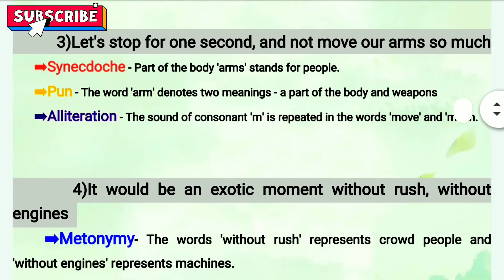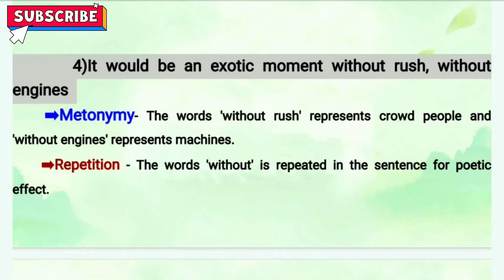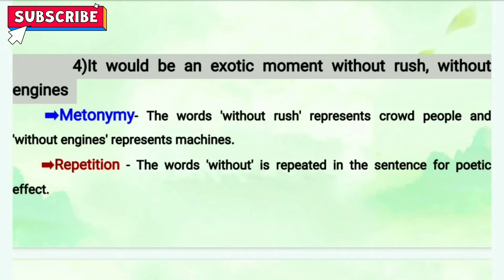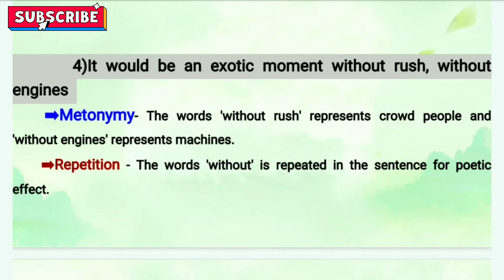Fourth line: 'It would be an exotic movement without rush, without engines.' Here 'without rush' and 'without engines' are used to represent something else — 'without rush' represents the crowd, and 'without engines' clearly represents noise, machines, and vehicles. Instead of naming them directly, a change of name is used, and that is why it is metonymy. The next figure of speech is repetition — 'without, without' is repeated twice. There is also alliteration in 'exotic' and 'engines' — the E sound is repeated.